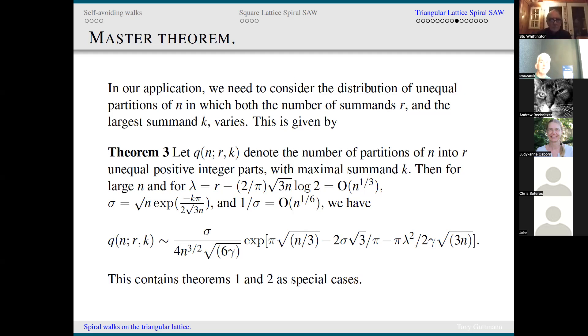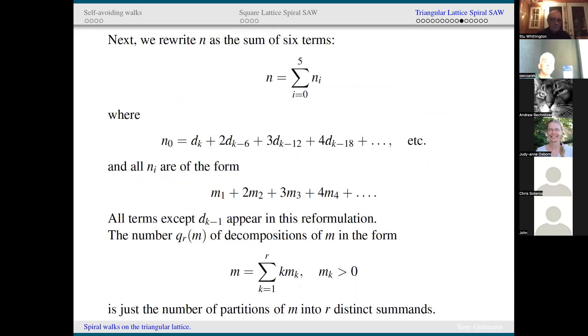In our application, we need to consider the distribution of unequal partitions of N in which both the number of summands and the largest summand varies. This is given by the third theorem, which combines the first two as special cases plus extra stuff. If Q_{N,R,K} is the number of partitions of N into R unequal positive integer parts and K is the size of the maximal summand, then for large N and lambda of order N to the one third, we have this rather horrible looking expression for Q_{N,R,K}, and this is the result that we need to solve the unconstrained partition problem.